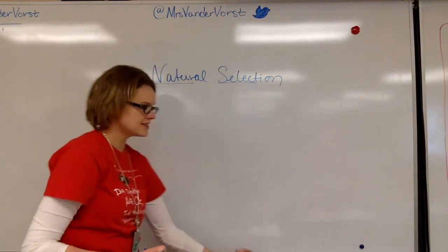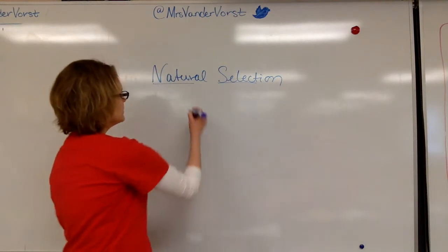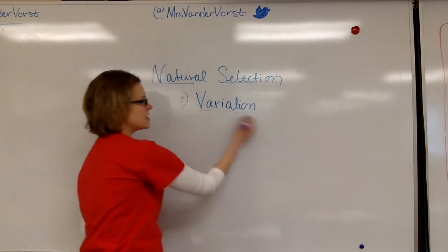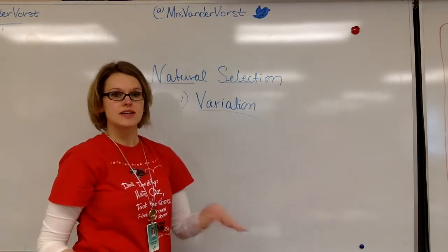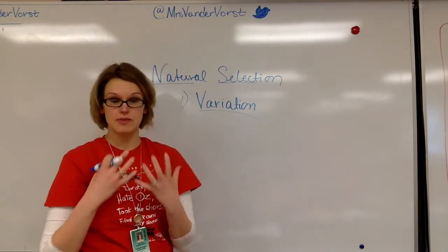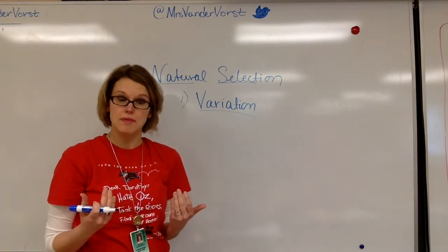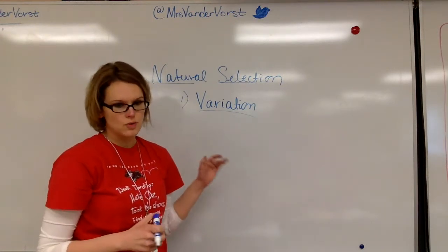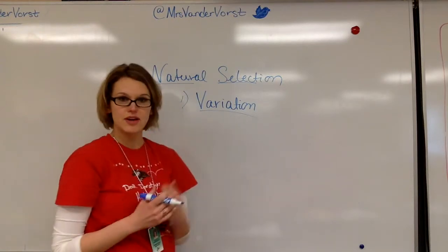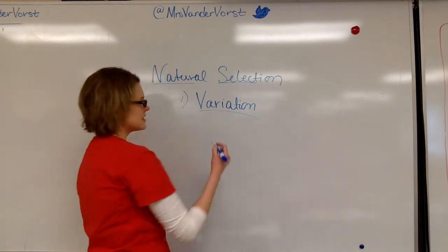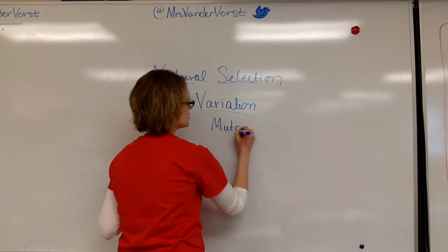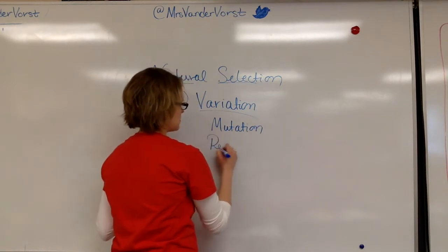Natural selection depends on a few things. One is variation — differences in a population. They are the reason that you and I don't have the same hair color, the same height, or the same facial features, because there's a lot of variation in the human population. The other thing that natural selection depends on is that some types of variation are favorable. Variation can come from genetics in things like mutation or recombination.